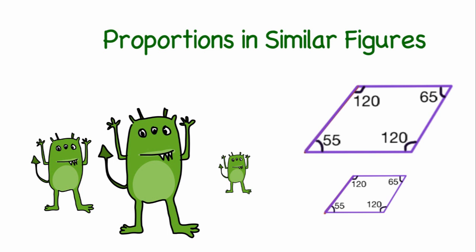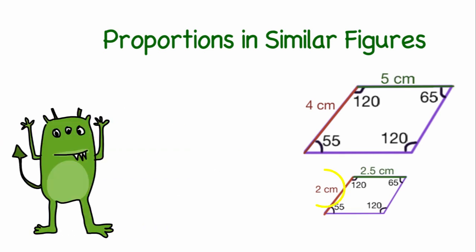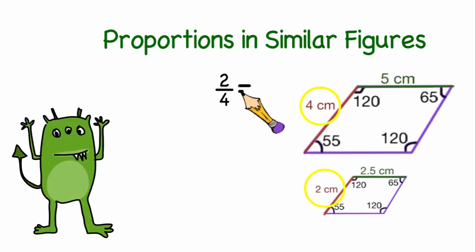For two polygons to be considered similar, their corresponding angles must be the same measure, and their corresponding sides need to be proportional. The ratio of the lengths of corresponding sides in two similar figures is also known as the similarity ratio.